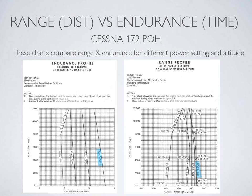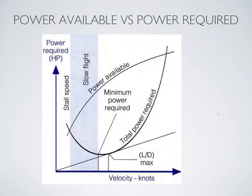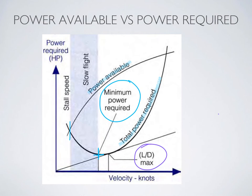Let's look at why that is. Looking at the power available versus power required curve — the lower curve being power required — notice that the minimum point of the power required curve is slower than the L/D max point, which minimizes drag. At a higher airspeed, you get better distance per unit of fuel burned due to minimized drag. But you can sacrifice some of that distance gain for increased lift at a cost of higher drag, and that gives you a point of maximum endurance.